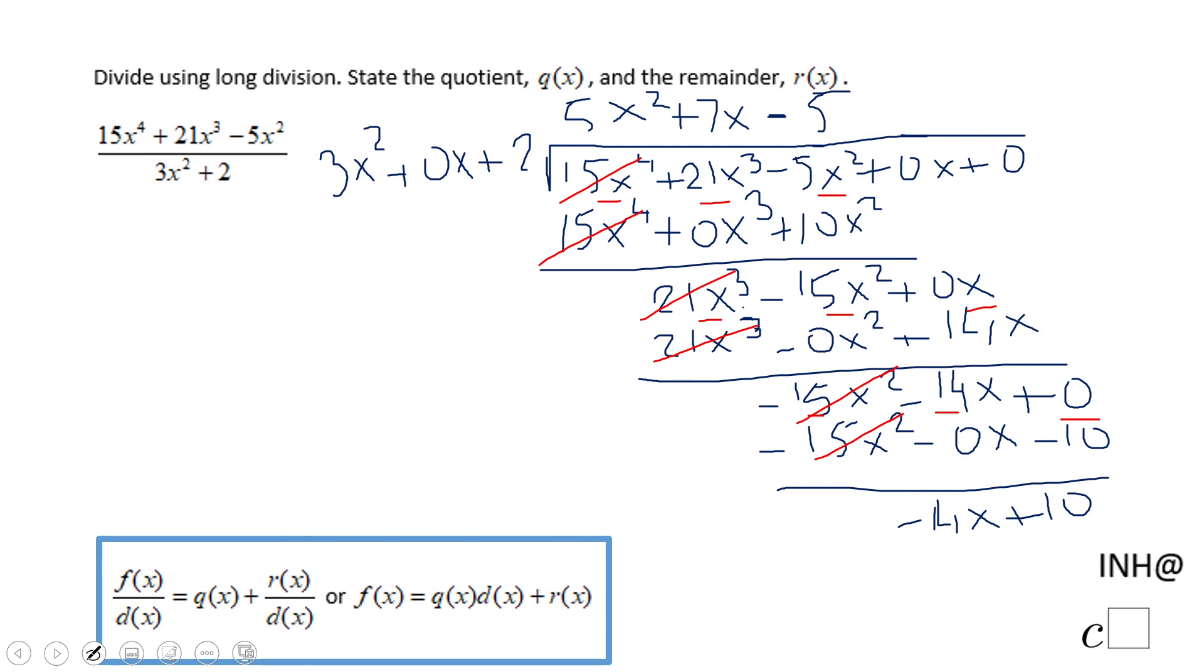And now we can identify q of x. Q of x is the answer. 5x squared plus 7x minus 5.